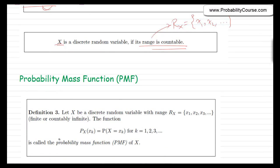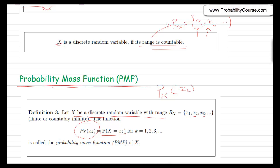When you have a discrete random variable, you can define a probability mass function, which tells you the probability of each value in the range. If x is a discrete random variable with range x1, x2, x3, and so on, then the PMF is the probability that x equals xk for any xk in the range. We denote this px(xk), which is the probability that the random variable x equals xk — so this is a function of xk.